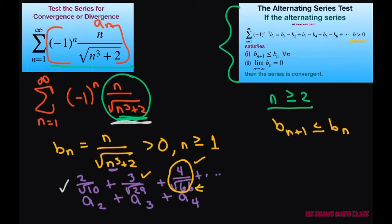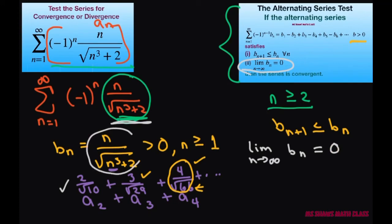Now the last thing we have to do is find the limit as n approaches infinity of b sub n, and that should equal 0. So let's look and see what we have. Let's go ahead and take our b sub n and divide everything by n — I'm going to do that on the next slide.